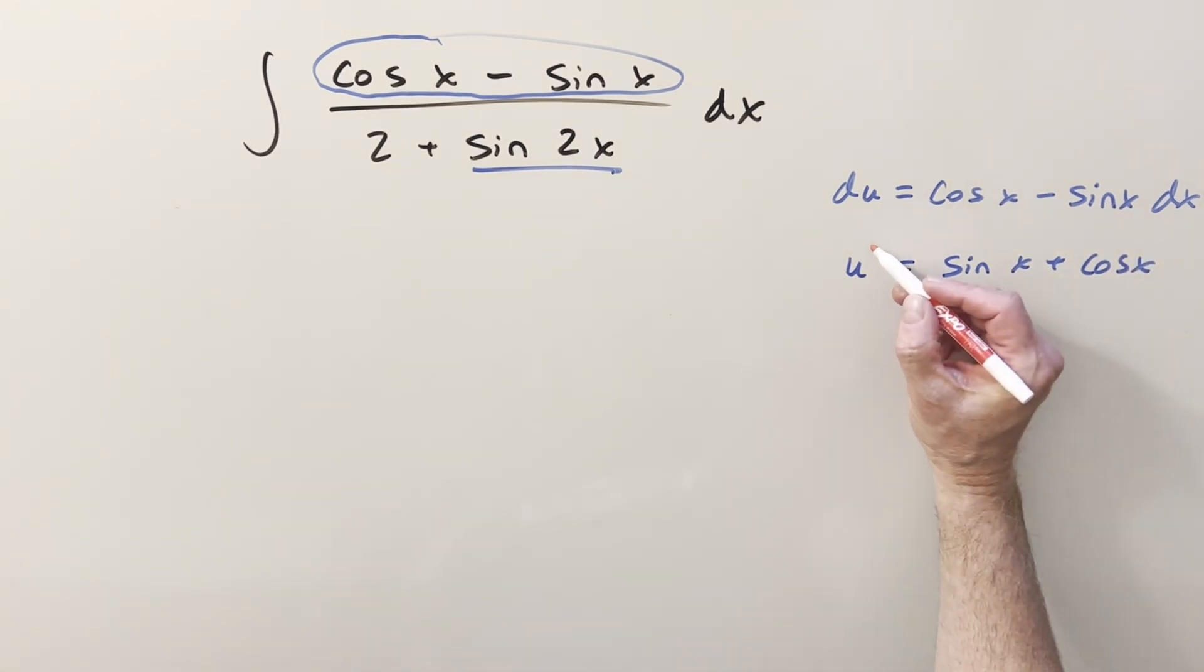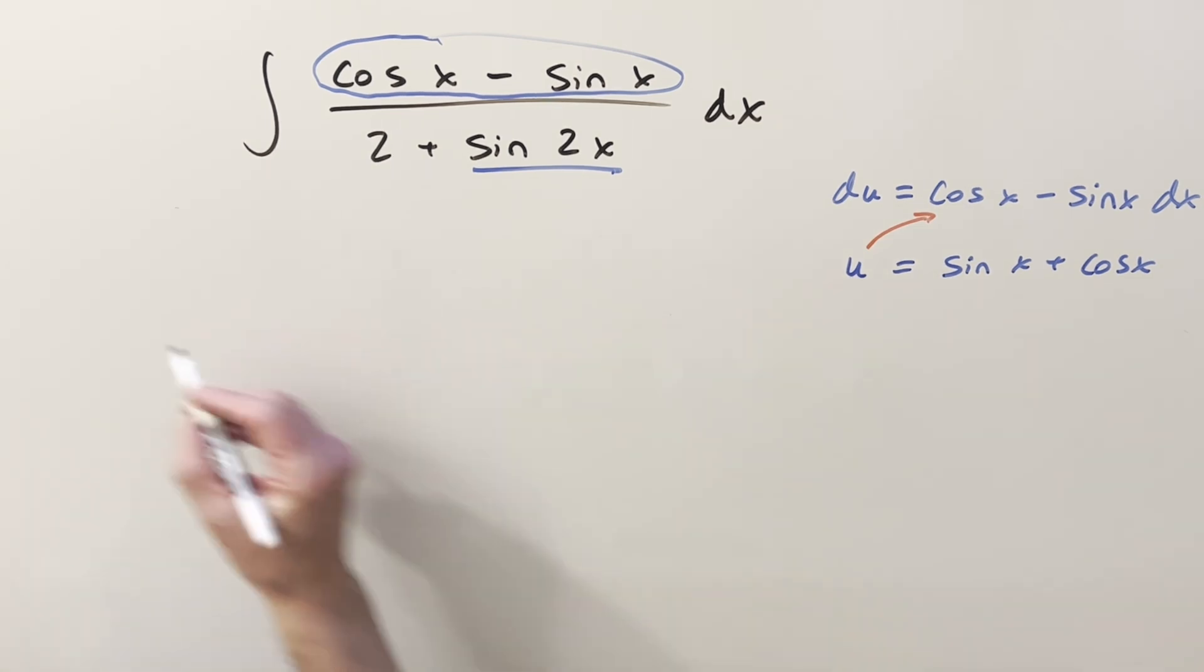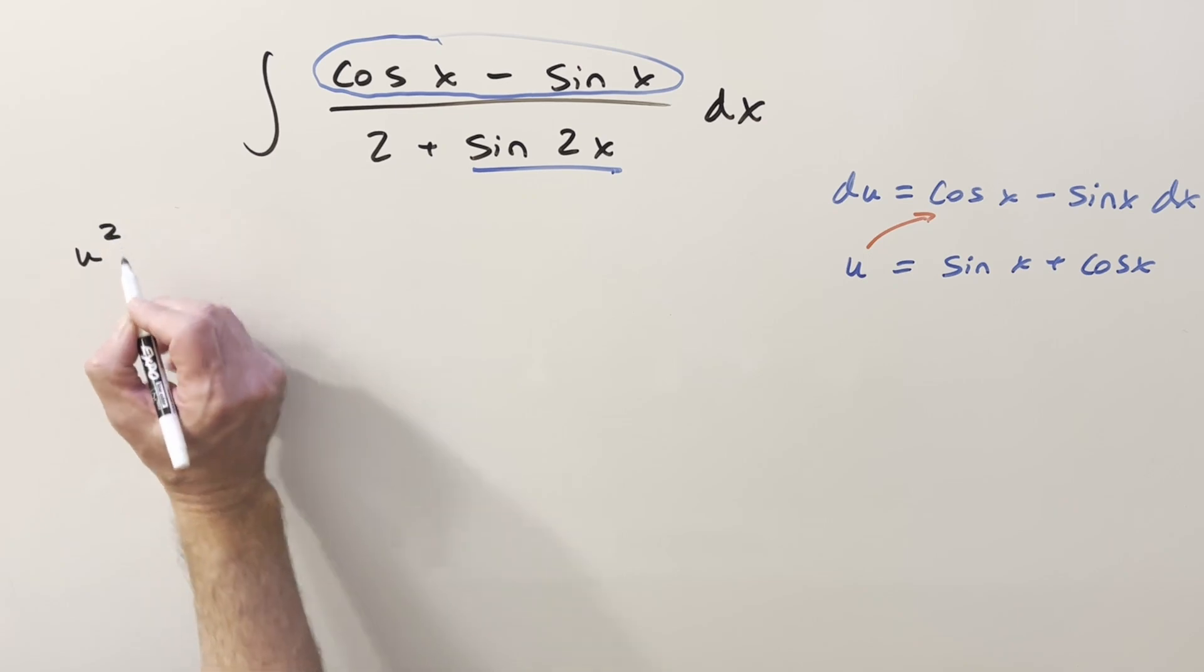Just noticing if you differentiate, you're going to get back to the du value. But then the question is where we find this in this denominator. What we can do is if we look at, let's just look at u squared.